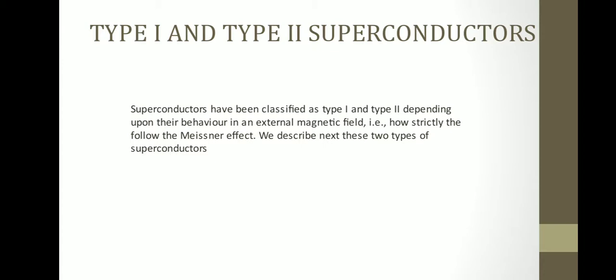Type I and Type II superconductors. Superconductors have been classified as Type I and Type II depending upon their behavior in an external magnetic field, that is, how strictly they follow the Meissner effect. We describe next these two types of superconductors.